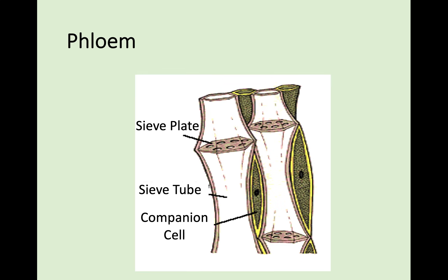Zooming in on the structure, the companion cells are these little green cells with a visible nucleus - they provide energy for the plant vessels. The tube itself in the phloem is called a sieve tube, and these plate-like objects found in phloem are called sieve plates. The sieve plates separate parts of the sieve tube, and the companion cells give phloem the energy to move sugar up and down.